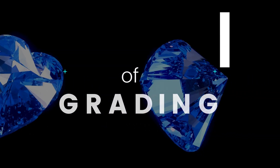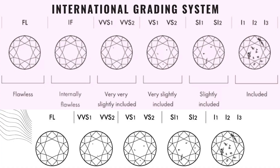To understand the six factors of grading, we have to go back and look at the different grading categories. According to the international grading system, we have the grading ranges as: Flawless (F), Internally Flawless (IF), Very Very Slightly Included VVS1 and VVS2, Very Slightly Included VS1 and VS2, Slightly Included SI1 and SI2, and Included I1, I2, and I3.